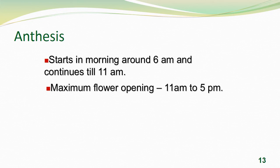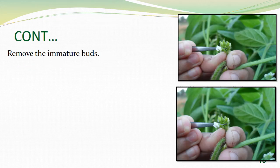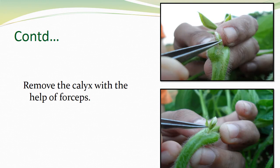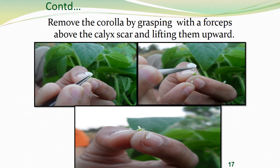Steps for emasculation: select the inflorescence containing young buds and remove the immature buds surrounding the main bud. Remove the calyx (sepals) with the help of forceps. Then remove the corolla by grasping with a forcep above the calyx scar and lifting upward — lifting upward avoids damaging the stigma. Remove all the diadelphous stamens with the help of forceps or a needle.